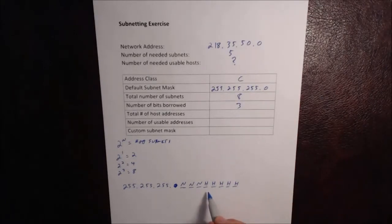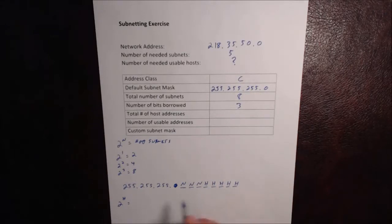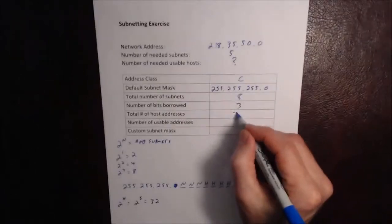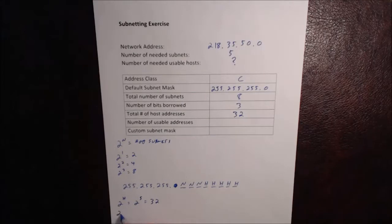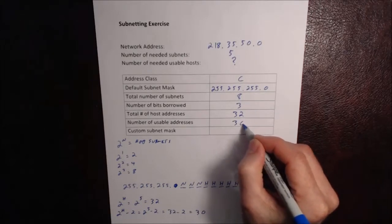To calculate the number of host addresses, remember that the formula is 2 to the h, where h is the number of host bits, and that tells us the total number of hosts. We've got five host bits, so that's 2 to the fifth, which equals 32. We subtract two, so 2 to the fifth minus two equals 32 minus 2, which equals 30. So we would have 30 usable addresses.